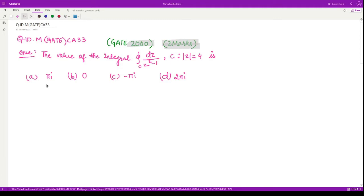In this question they are asking what is the value of this integral dz divided by z square minus 1 when computed over C, where C is defined by this circle |z - 0| = 4. The center of this particular circle is at the origin and the radius is 4.